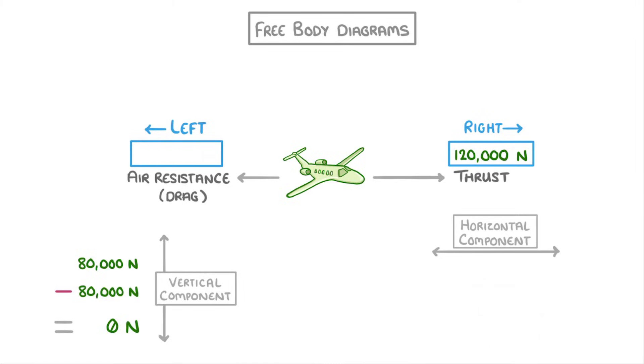If though we had a slightly different scenario, where the air resistance was 120,000 newtons instead, then we'd be doing 120,000 minus 120,000, and so the horizontal resultant force would be zero.